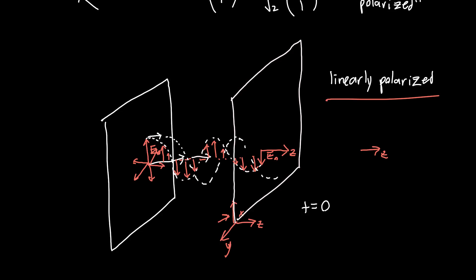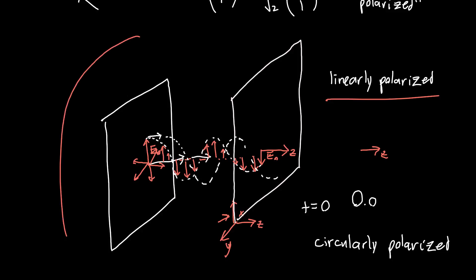You might be asking why the electric field would ever change direction as it goes forward — and that's going to be the subject of the next video on circularly polarized light, which is where things get really interesting and where Jones vectors start to become really, really valuable. I hope you enjoyed the video. If you did, please give it a like and subscribe to my channel. If you have any questions or comments, please feel free to post those below and I'll try to get back to you as soon as I can.